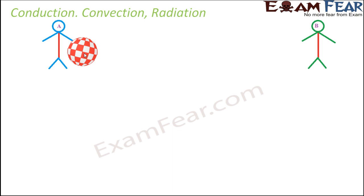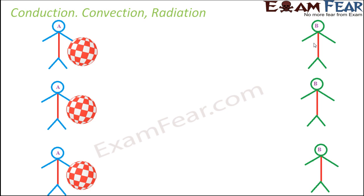Okay, so now let's first try to understand this example in terms of the boys and the ball. Let's say A wants to transfer this ball to B. How can A do this? There are three different ways by which A can transfer the ball to B.